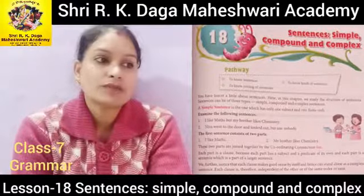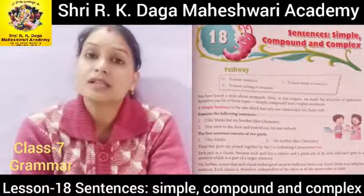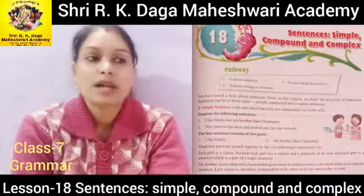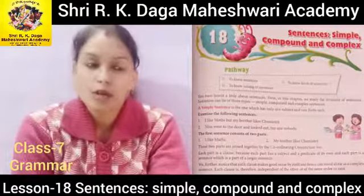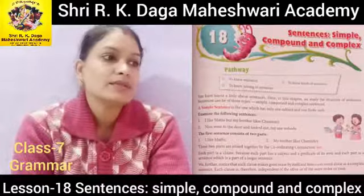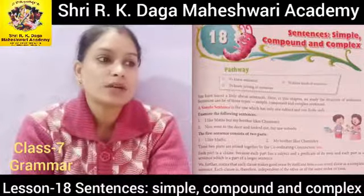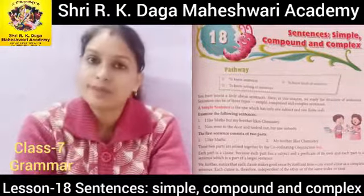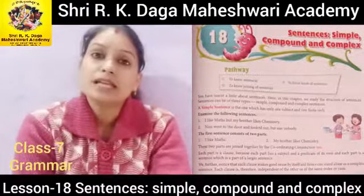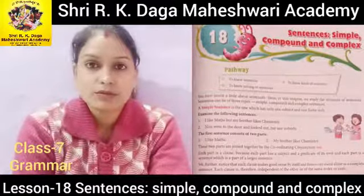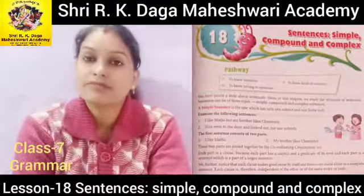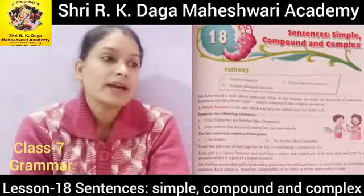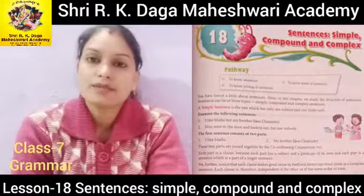A sentence can be of three types: simple, compound, and complex. A simple sentence is one which has only one subject and one finite verb. Now we will examine some example sentences.